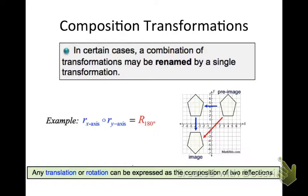Now, in certain cases, a combination of transformations may be able to be renamed using a single transformation. Look at this example. I have a pre-image in quadrant one. And based on my composition transformation over here, I first have to reflect it over the y-axis because I have to do what's second first. And then I'm going to reflect it over the x-axis. And when I look at my image and my pre-image after those two reflections, I realize I could just say this was a rotation of 180 degrees.